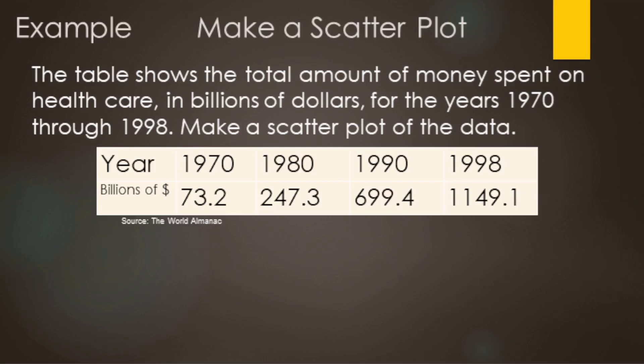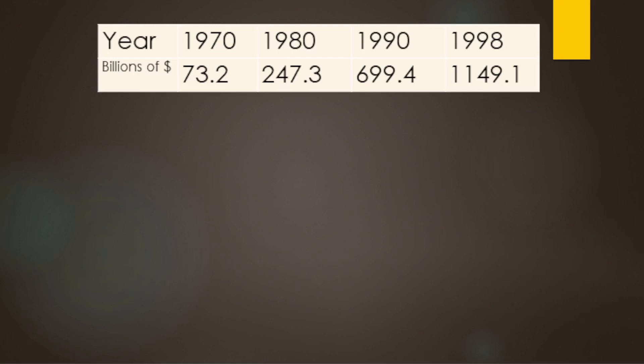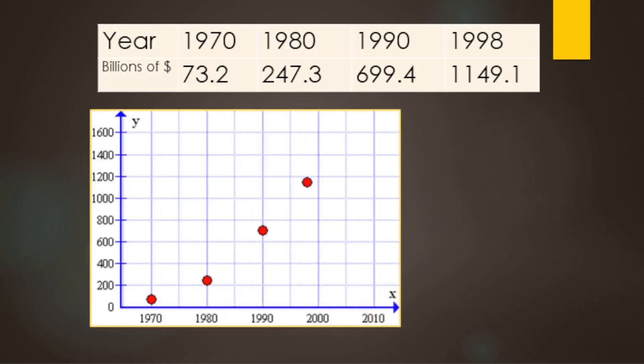Let's look at another example. The table shows the total amount of money spent on healthcare in billions of dollars for the years 1970 through 1998. Make a scatter plot. So 1970 goes with 73.2, and 1980 goes with 247.3.